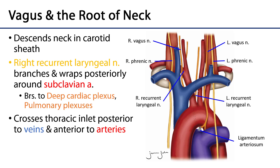As we get to the root of the neck, the vagus is still descending within that carotid sheath. On the right side, the right vagus at the root of the neck is going to give off the right recurrent laryngeal nerve. That nerve is going to head toward the tracheoesophageal groove up towards the larynx, and it's going to give off branches to the deep cardiac plexus as well as the pulmonary plexuses.